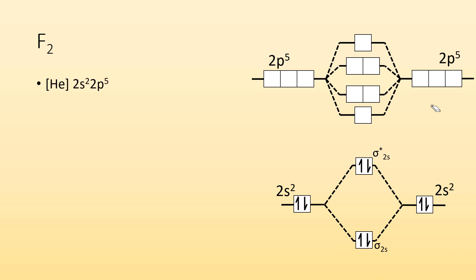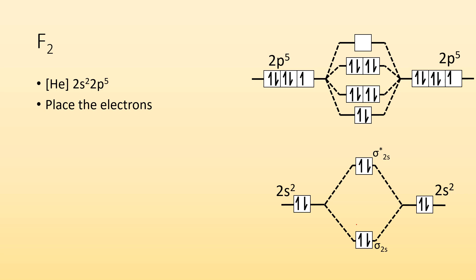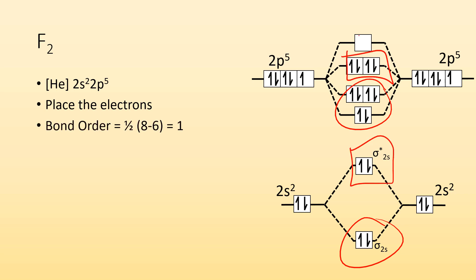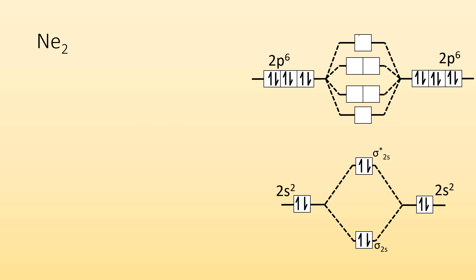F2, same process. Fluorine is 2s2, 2p5. Draw in the electrons and place all 10 valence electrons into the molecular orbitals. We have 8 bonding electrons and 6 anti-bonding electrons. One half of 8 minus 6 gives a bond order of 1. That's consistent with what we already know about fluorine.